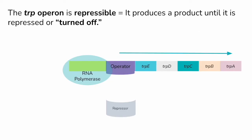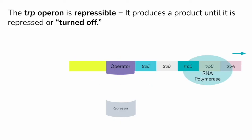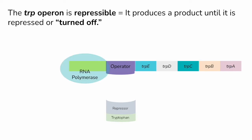Let's take a brief look at a repressible operon. The trp operon is not listed explicitly in the AP Biology curriculum, but you might be introduced to it in a question. This is a type of operon that keeps transcribing and producing a product until it's turned off. In its usual state, it is transcribing and creating proteins which will generate tryptophan, something the cell needs.